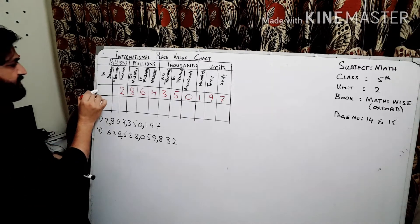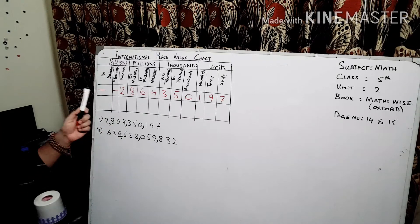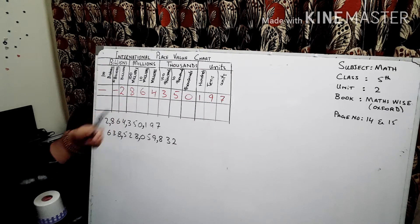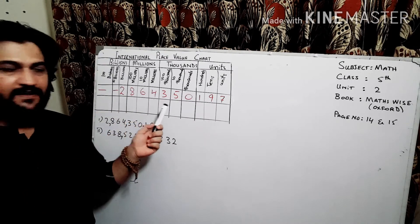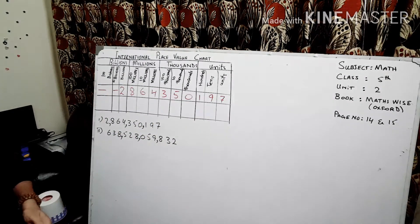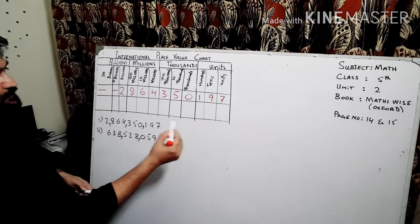These two places are empty, so we can read it like two billion, eight hundred sixty four million, three hundred and fifty thousand, and one hundred ninety seven.